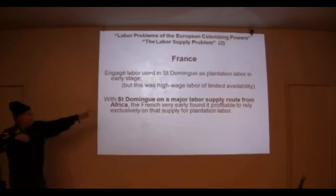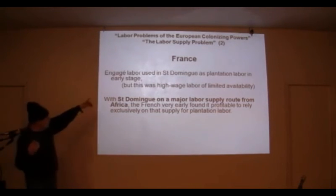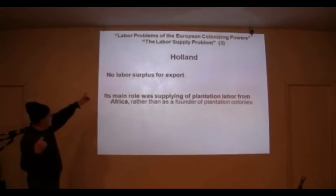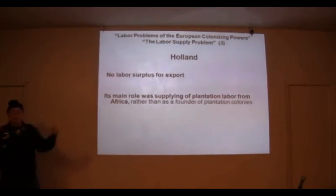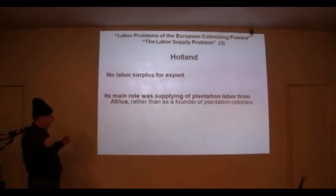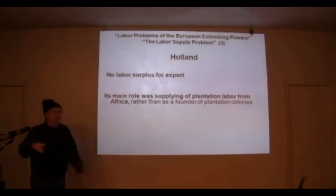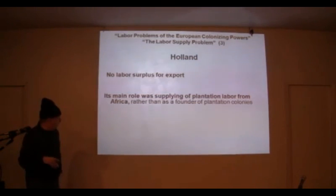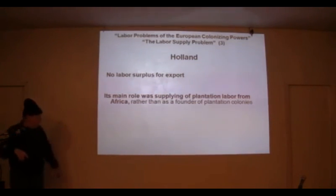Haiti and the Dominican Republic were on the supply route direct from Africa, the way the currents came and such. Holland had major involvement in the trade of African laborers, but it had no surplus labor for export, so its main role was supplying plantation labor from Africa.